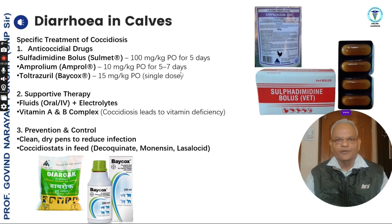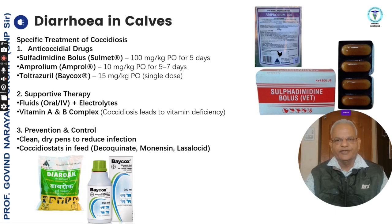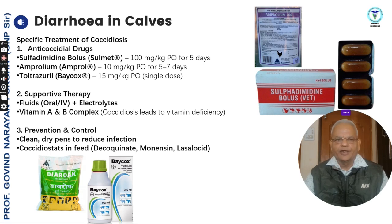Amprolium 10 mg per kg orally for 5 to 7 days. Toltrazuril 15 mg per kg orally as a single dose. Supportive therapy includes electrolytes and vitamin A and B complex, because coccidiosis leads to vitamin deficiency. For prevention of coccidiosis, monensin and lasalocid can be used.